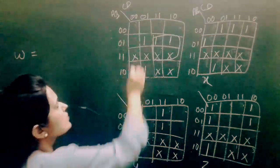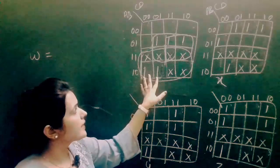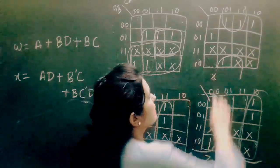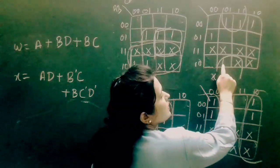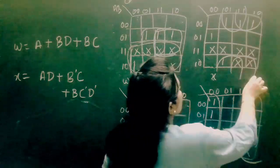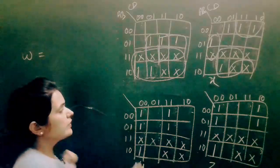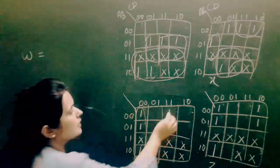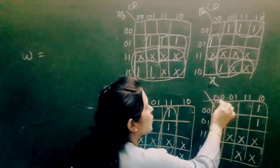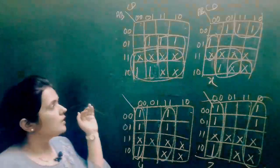Our next group combines these two 1s with two don't cares to form a larger group. These two 1s can be combined with all of the crosses to make a group of 8. In the X K-map, these two 1s are rolled with this 1 and cross to make a group of 4. In Y, we also make appropriate groups, and in Z we do rolling as well. So this is the grouping for W, X, Y, and Z.